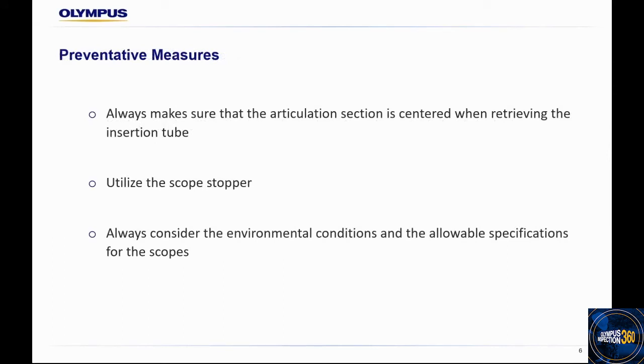Some preventative measures you can take: always make sure the articulation section is centered when retrieving the insertion tube. On our videoscopes' main screen, you can see an icon when articulation is locked—a scope with a lock icon. You can center the insertion tube by pressing the center button on the controller and the icon will disappear. Once that happens, you're good to go and can start the retrieval process.